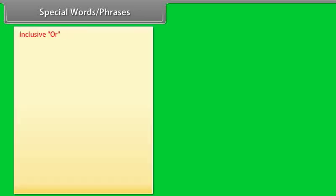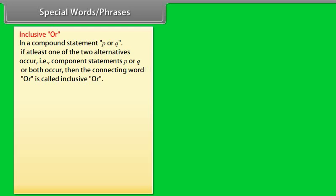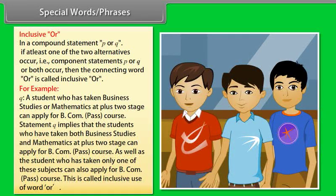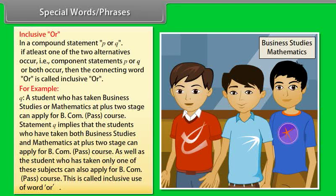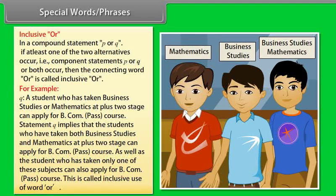Inclusive OR: In a compound statement 'P or Q', if at least one of the two alternatives occurs — that is, P or Q or both — then the connecting word OR is called inclusive OR. For example, Q: 'A student who has taken business studies or mathematics at plus 2 stage can apply for BCom pass course.' This includes students who took both subjects, as well as those who took only one. This is called the inclusive use of the word OR.